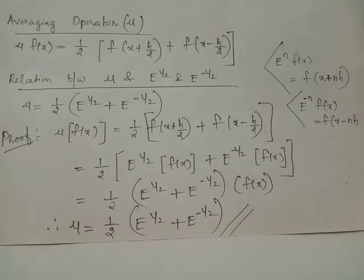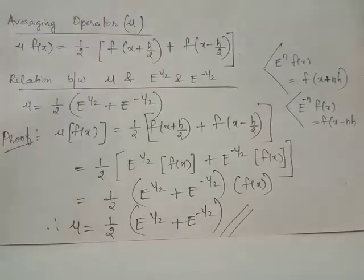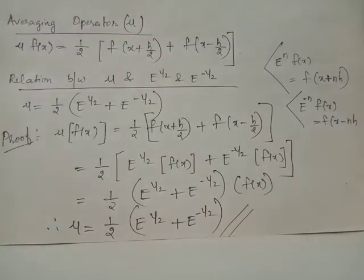The averaging operator is notated using the symbol mu. Mu of f(x) equals 1/2 times f(x + h/2) plus f(x - h/2). Recall that the central difference operator was taking the difference between these two values. Here, the averaging operator is taking the average of these two values, f(x + h/2) and f(x - h/2).